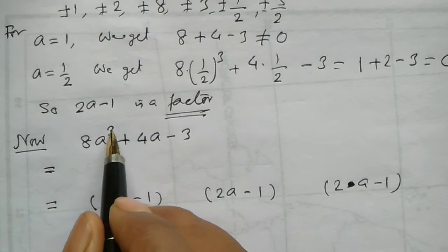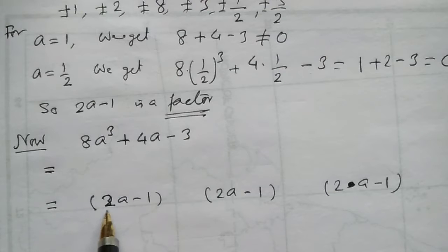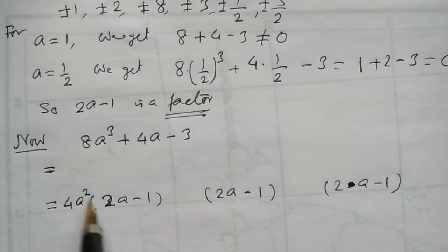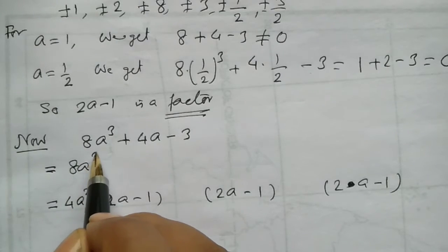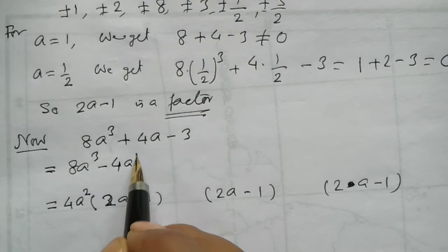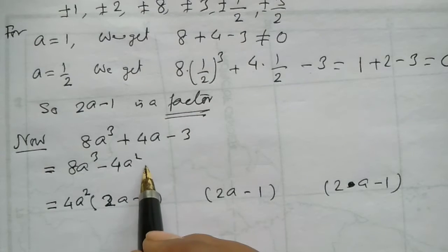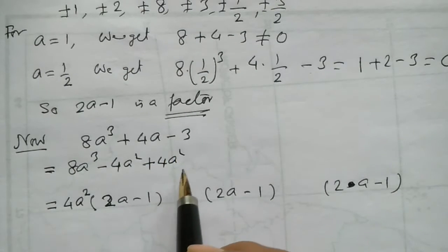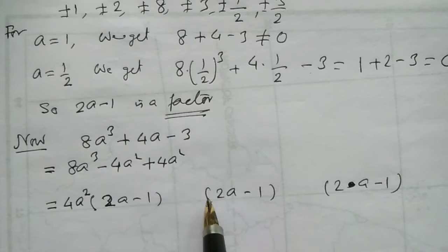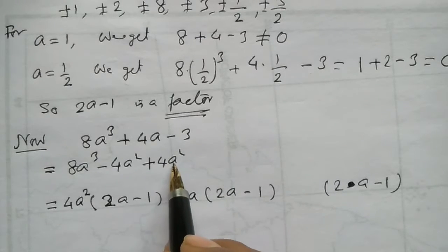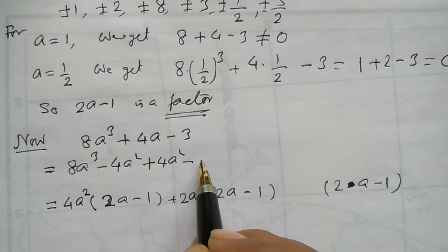Here we have 8a cube, so we can multiply 4a squared — that is, 4a squared into 2a gives 8a cube, and 4a squared into minus 1 gives minus 4a squared. To get the next term involving 4a squared, we multiply 2a with 2a to get 4a squared, and 2a into (2a minus 1) gives minus 2a.